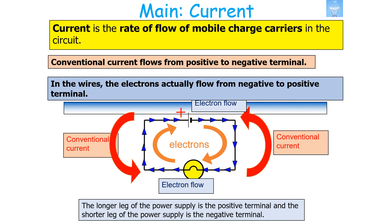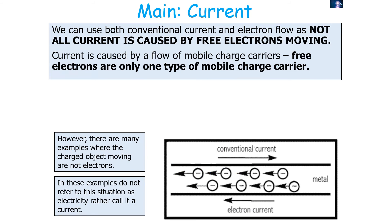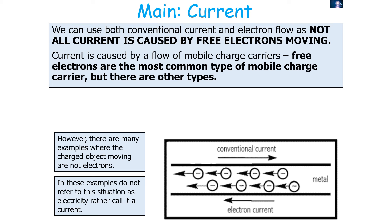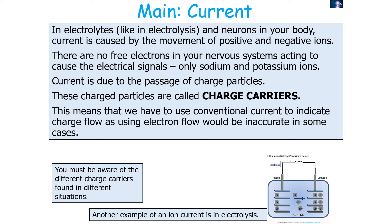You can tell the difference between the two in your diagrams, because the longer leg of the power supply is the positive and the shorter leg is the negative. We use both conventional current and electron flow because not all current is caused by free electrons — current is caused by the flow of mobile charge carriers, and free electrons are only one type. In electrolytes, electrolysis, and neurons in your body, current is caused by the movement of positive and negatively charged ions. There are no free electrons in your nervous system — only sodium and potassium ions. So we must use conventional current to indicate charge flow, as using electron flow would be inaccurate in some cases.